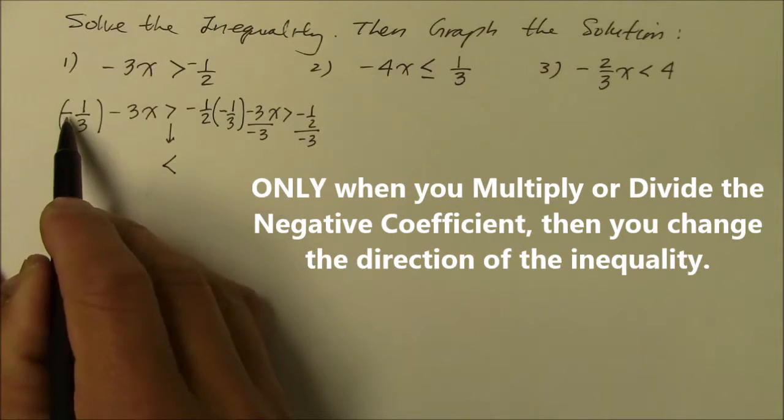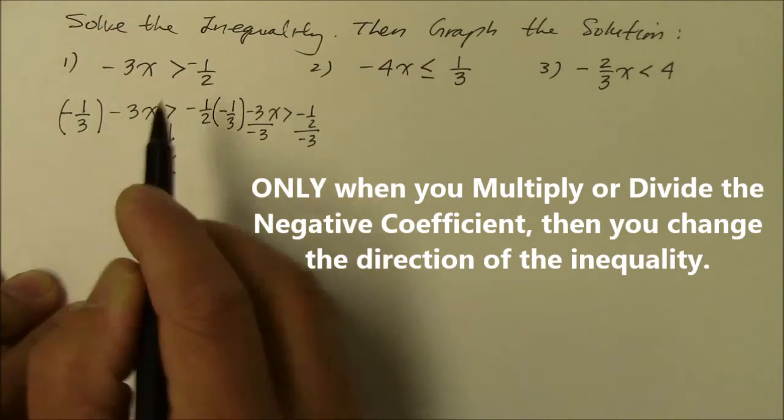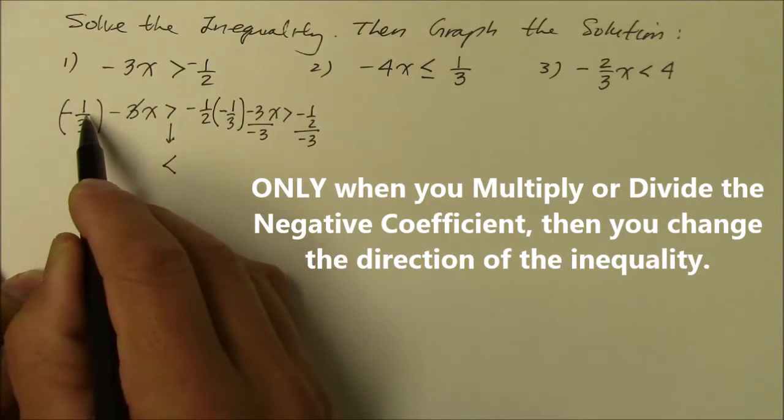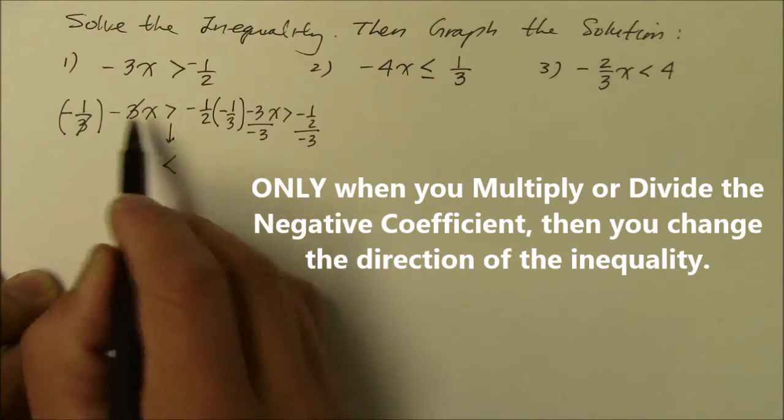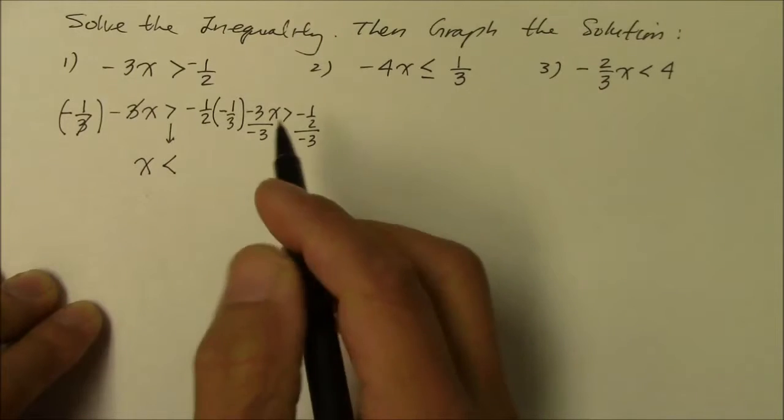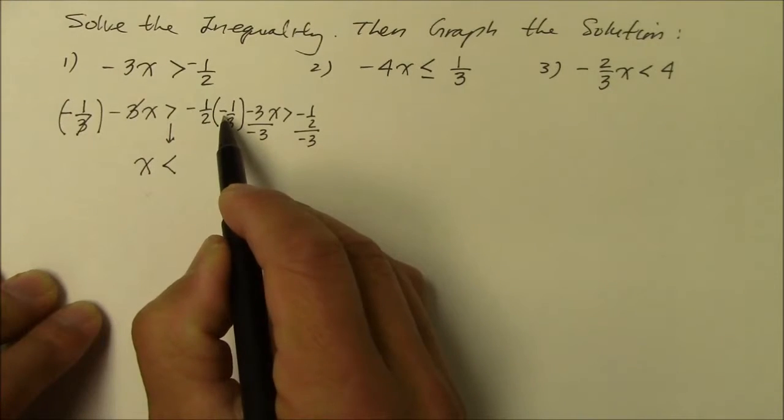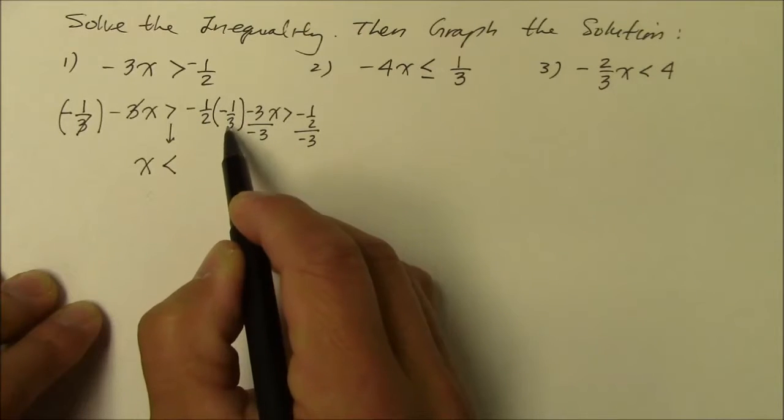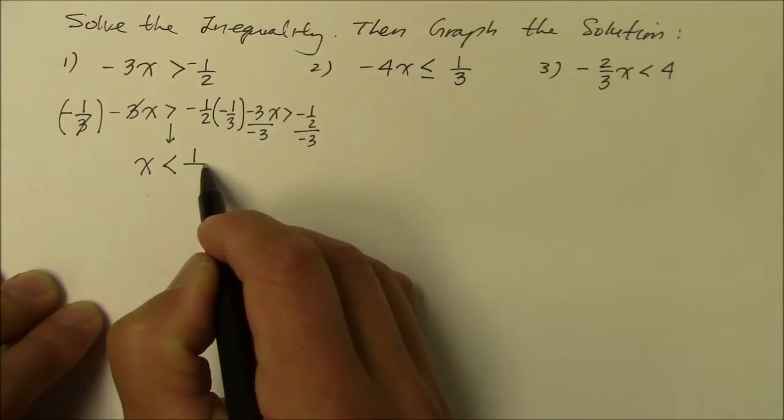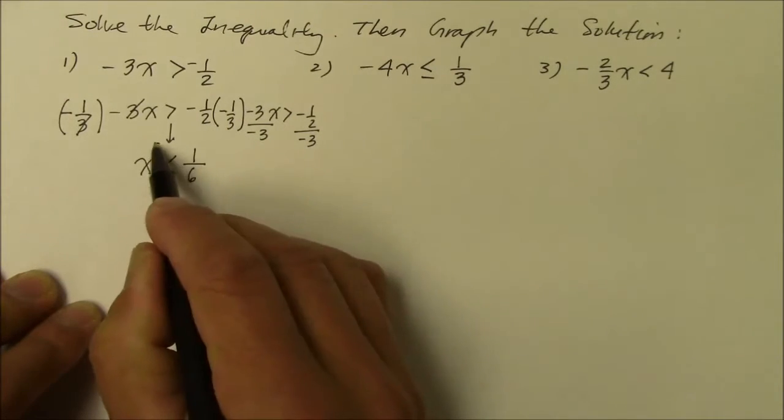Now, on the left side, negative and negative becomes positive. And the 3 and the denominator 3 simplifies out. So we got 1x, or simply x. On the right side, negative and negative on this side becomes positive as well. And 1 half times 1 third multiplied across, we get 1 over 6. That's the answer.